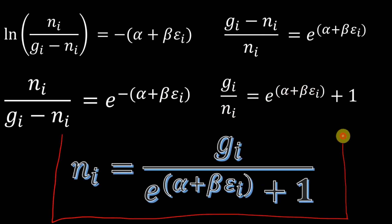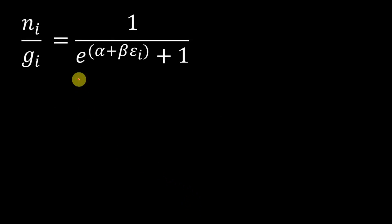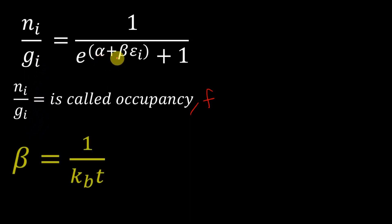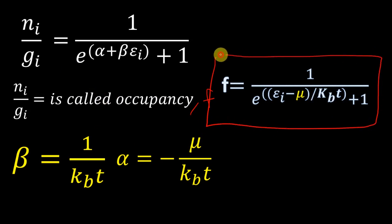Therefore N_i = G_i / [e^(alpha + beta·E_i) + 1]. This is the Fermi-Dirac distribution law. The occupancy F = N_i/G_i can be written using alpha = -mu/(k_B·T) and beta = 1/(k_B·T), giving the familiar form: F(E_i) = 1 / [e^((E_i - mu)/(k_B·T)) + 1]. This will be determined further in the next video.